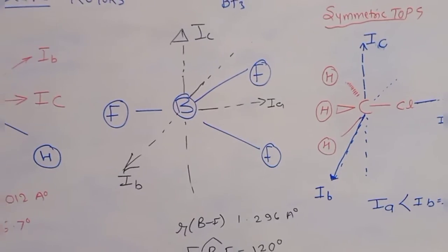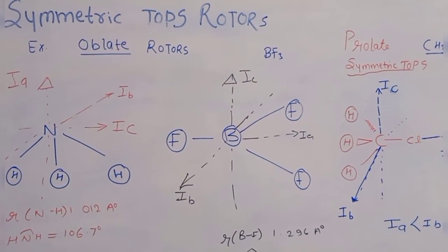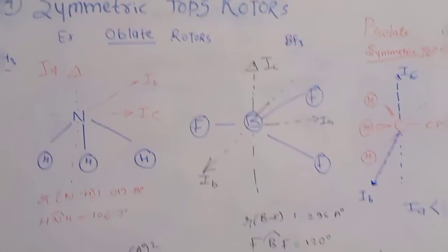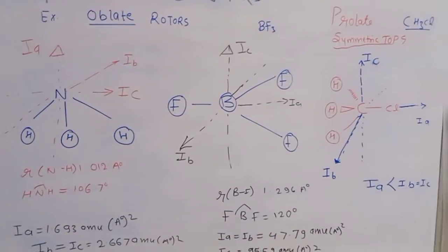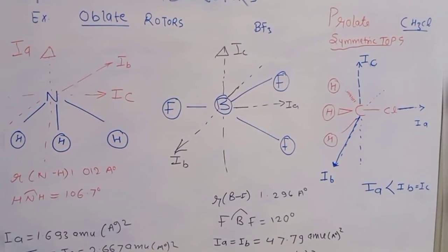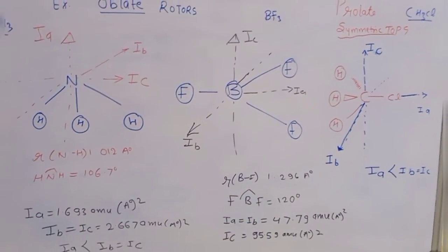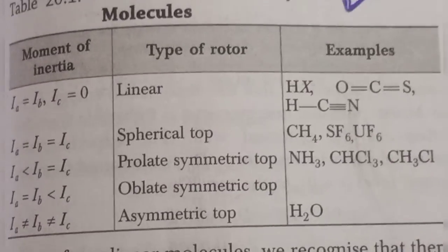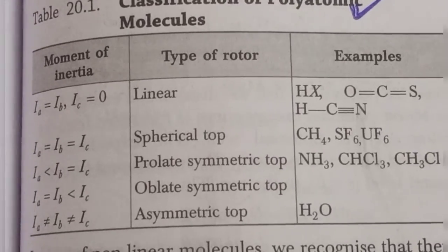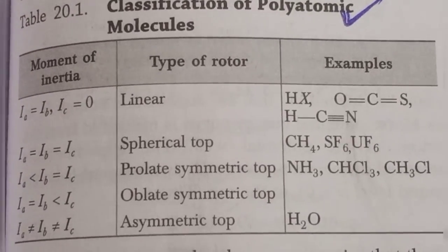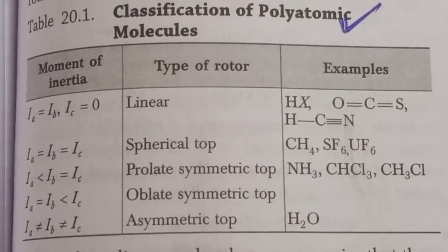To summarize: for oblate symmetric tops, use examples like NH3 and BF3; for prolate symmetric tops, use examples like CH3Cl. I hope you can complete your notes from this video. Please share it with your friends, and if you haven't subscribed to the channel, please subscribe. Thanks for watching.